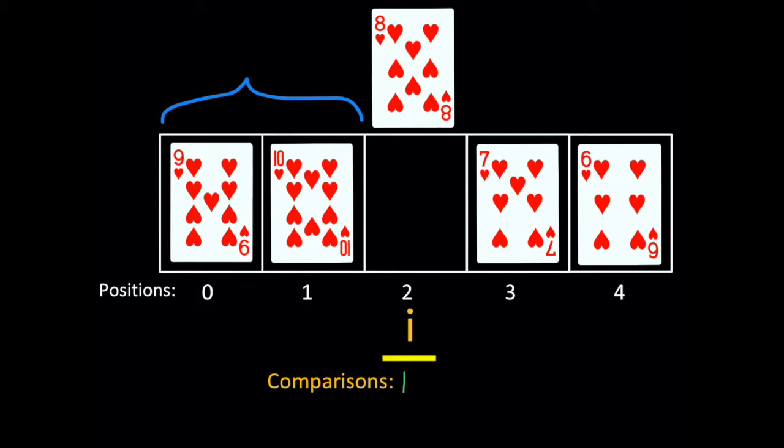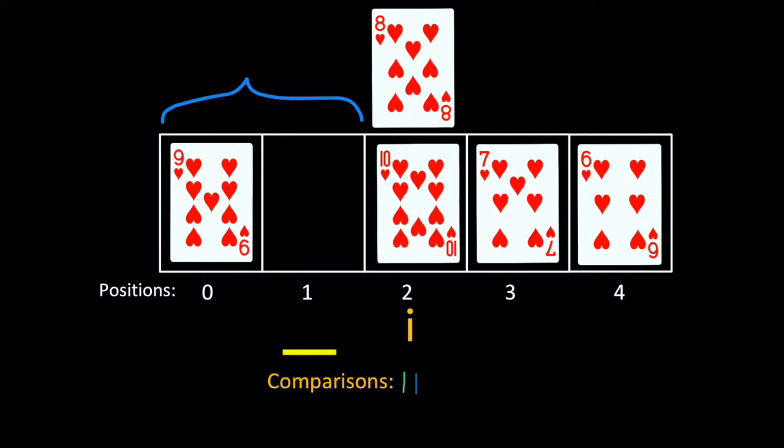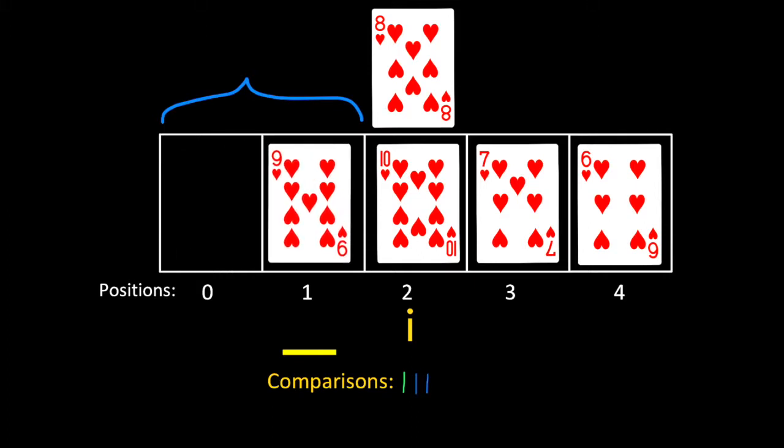Should 8 go right of 10? No, it should not. Should 8 go right of 9? No, it should not. Sort pose can't go any farther left, so 8 goes at position 0.